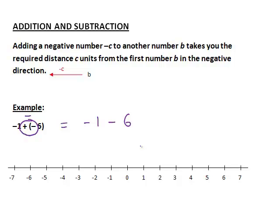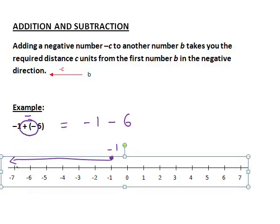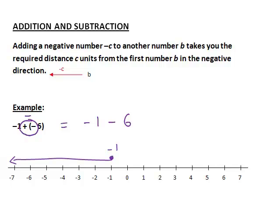Therefore, we saw before that subtracting a positive number takes us the required distance from the first number in the negative direction. So here we start at -1, subtracting 6 from that. That will take us another 6 units in the negative direction, which in this case gets us to -7.